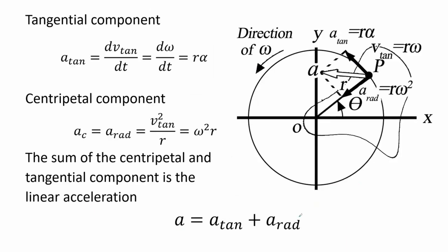The linear acceleration is the sum of two types of acceleration components. The first is the tangential acceleration, which is related to its tangential velocity and can be expressed as tangential acceleration equals radius times angular acceleration. The other is the radial acceleration, also called centripetal acceleration, which equals the square of angular velocity times the radius. The sum of these two accelerations is the linear acceleration, utilized so far with the assumption that objects do not rotate.